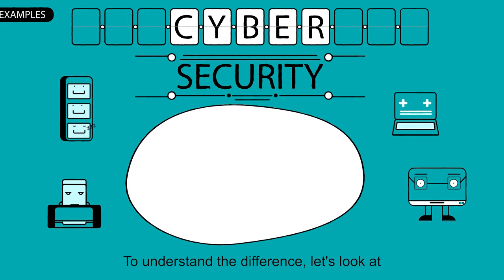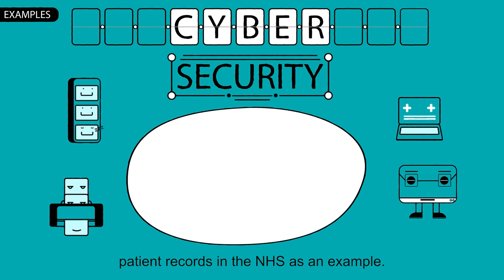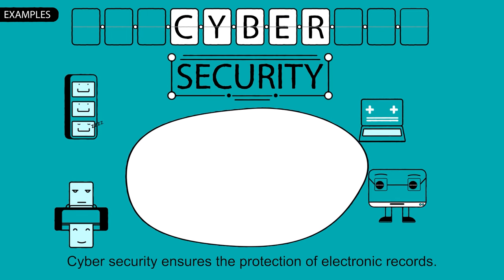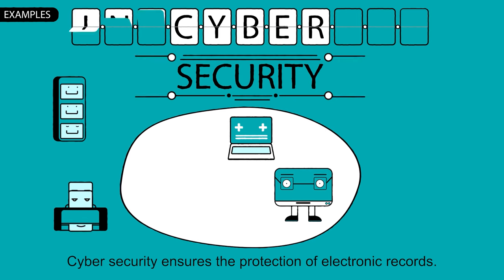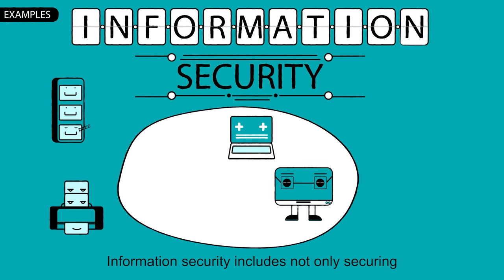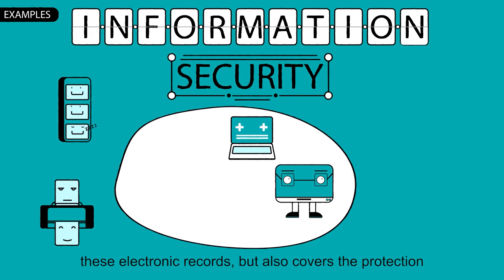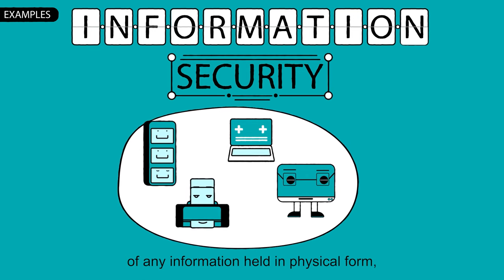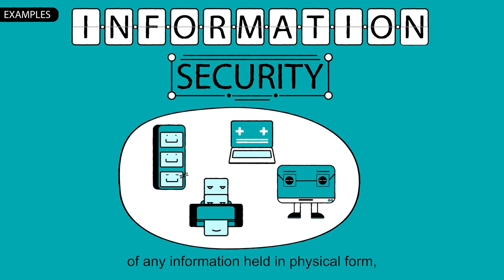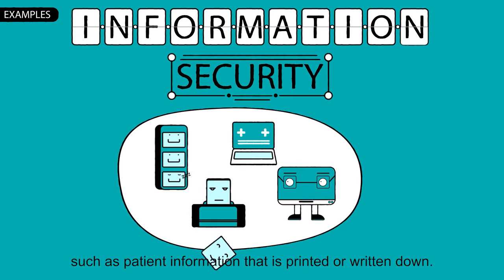To understand the difference, let's look at patient records in the NHS as an example. Cybersecurity ensures the protection of electronic records. Information security includes not only securing these electronic records, but also covers the protection of any information held in physical form, such as patient information that is printed or written down.